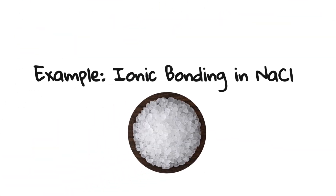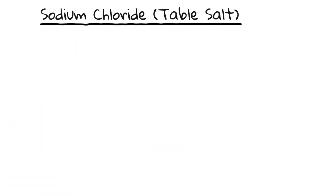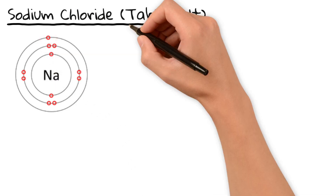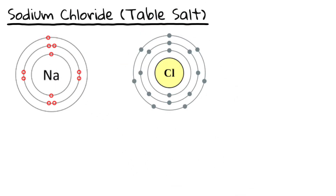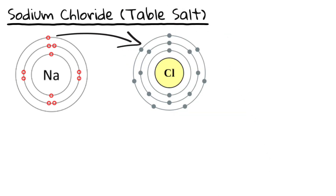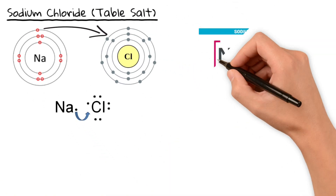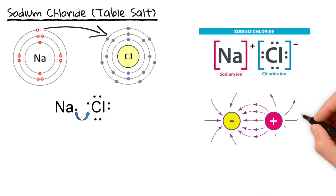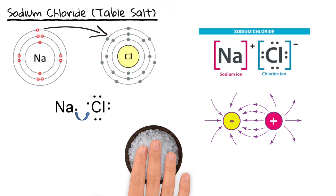Let's take a look at a real world example: table salt. Sodium is a metal with one electron in its outer shell. Chlorine is a nonmetal with seven electrons. Sodium loses its one electron forming an Na⁺ ion, and chlorine gains that electron forming a Cl⁻ ion. The Na⁺ and Cl⁻ ions attract, forming an ionic bond — and just like that, you have sodium chloride, or table salt.